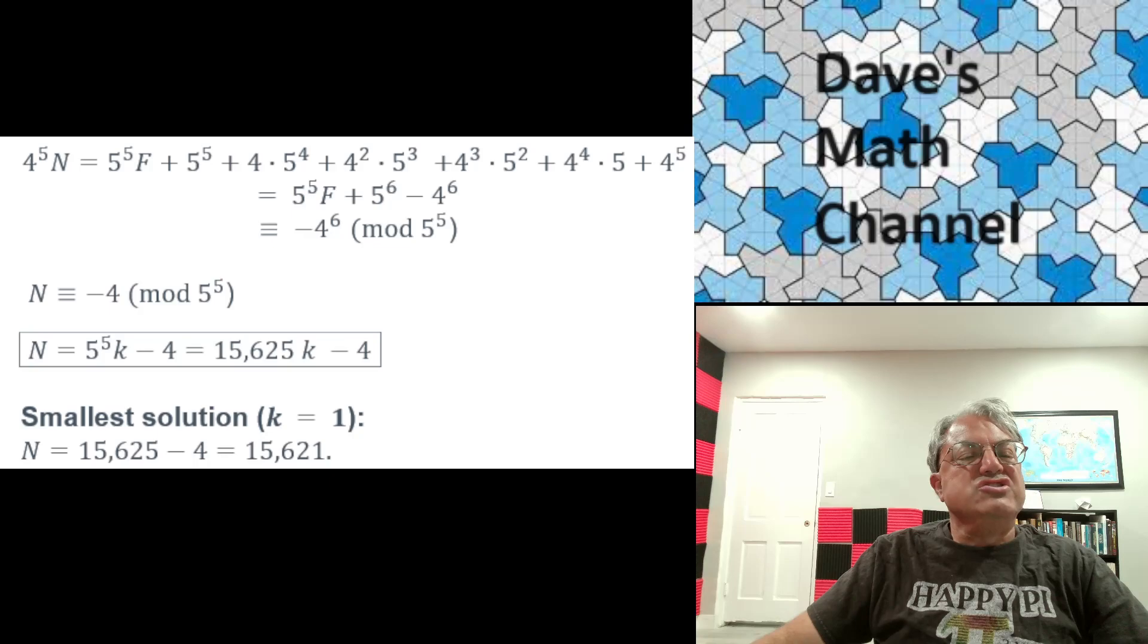We can use modular arithmetic. So notice that if we don't care about these factors of 5 to the fifth, if we only care about the remainder after we divide by 5 to the fifth, you get 4 to the fifth N is congruent to minus 4 to the sixth modulo 5 to the fifth. That's the last factor, that's the only one that's not divisible by 5 to the fifth. But now notice that both the left and right sides are divisible by 4 to the fifth. So we can divide by that because 4 to the fifth is relatively prime to 5 to the fifth. When we do that, we get N is congruent to minus 4 modulo 5 to the fifth. And what that really means is that N is a multiple of 5 to the fifth, an integer multiple of 5 to the fifth minus 4. That's the general solution I put in this box here.